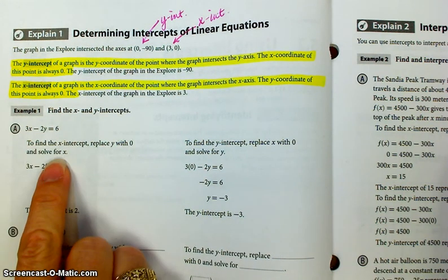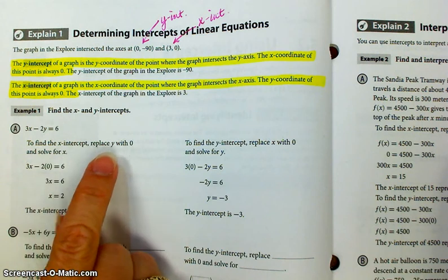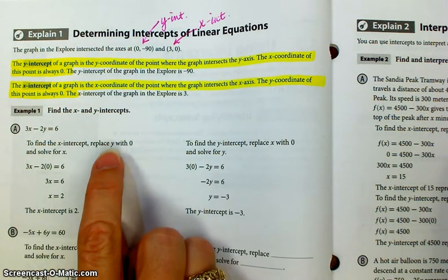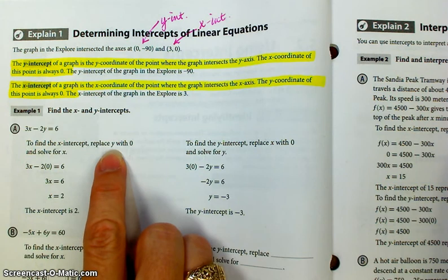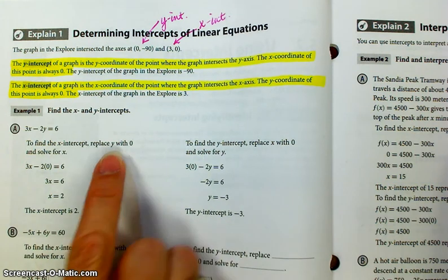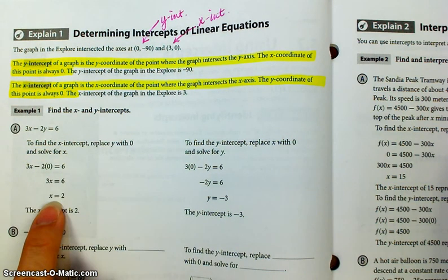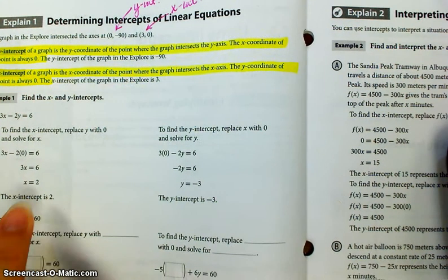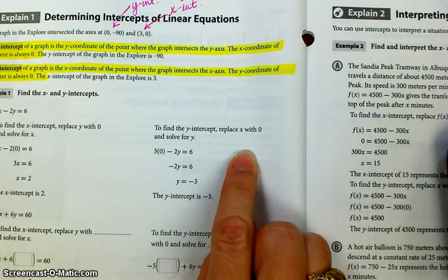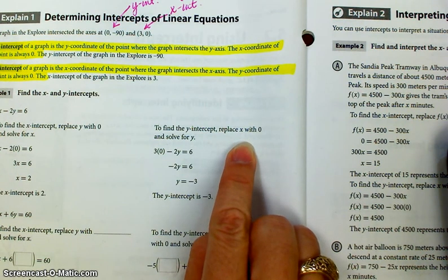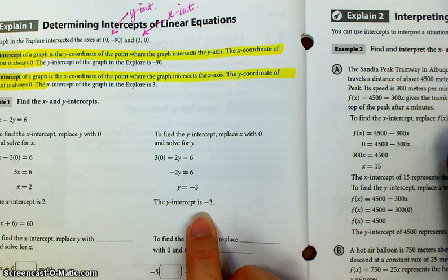And if you want to find the x-intercept, then what you're going to do is you're going to replace the y with 0 and solve for x. So they've done that. They place 0 in here for y. And when you solve, x is equal to 2. So the x-intercept is 2. To find the y-intercept, you're going to do just the opposite. So you'll replace x with 0 and you'll solve for y. The y-intercept is negative 3.